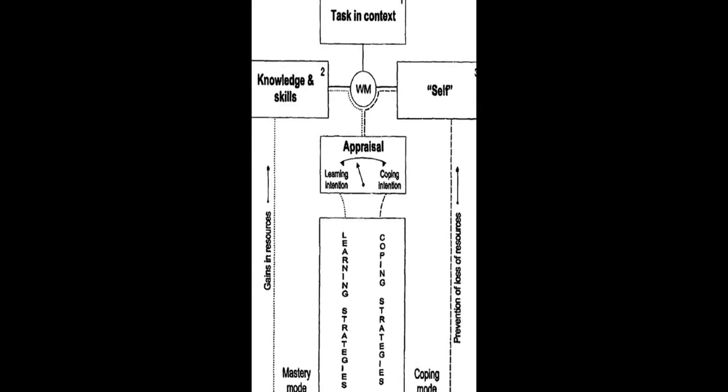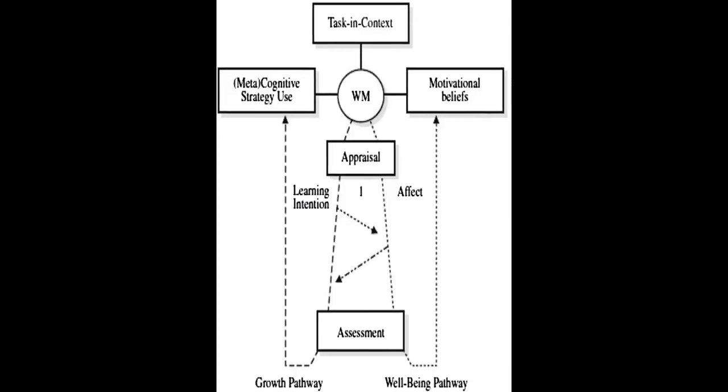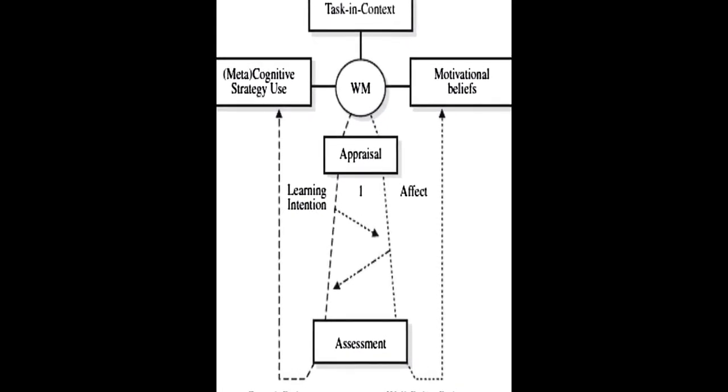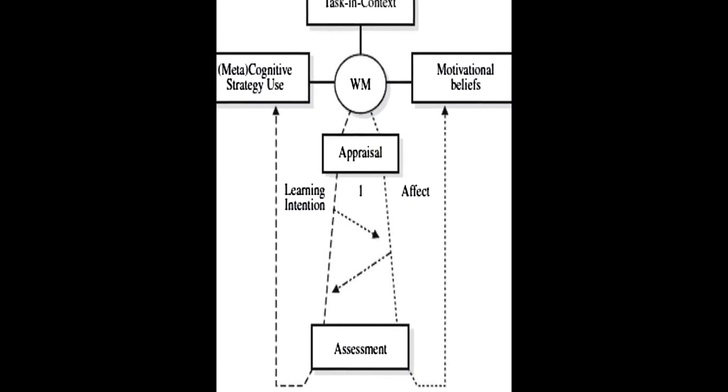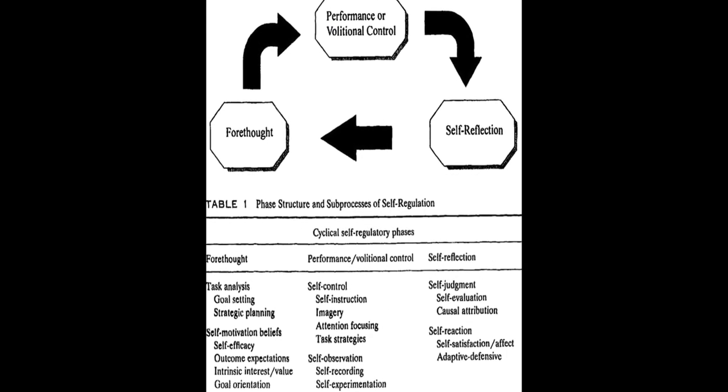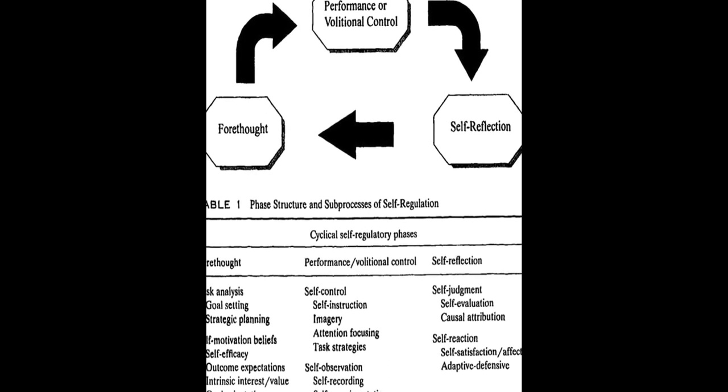Six models of SRL are analyzed and compared in this paper: Zimmerman, Boekaerts, Winne and Hadwin, Pintrich, Efklides, and Hadwin, Jarvelá, and Miller. Each model is explored in detail, including its history and development, description, empirical support, and instruments constructed based on the model.